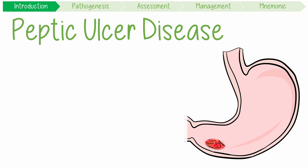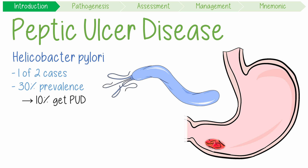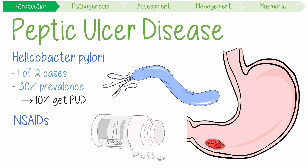PUD is mostly caused by a bacteria called Helicobacter pylori, which accounts for one in two cases. Although 30% of Australians have H. pylori, only 10% will develop PUD. The second most common cause is non-steroidal anti-inflammatory drug use, like aspirin, which is associated with one in three cases.